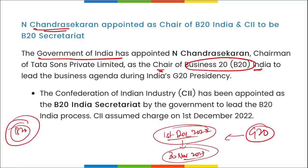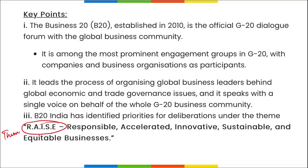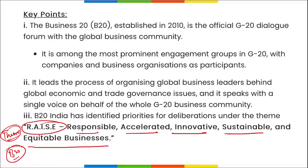The B20 Summit was established in 2010 and leads the process of organizing global business leaders around economic and trade governance issues. B20 India has identified priorities under the theme 'RAISE' — Responsible, Accelerated, Innovative, Sustainable, and Equitable business. The Confederation of Indian Industry (CII) has been appointed as the B20 India Secretariat and assumed charge on 1st December 2022.